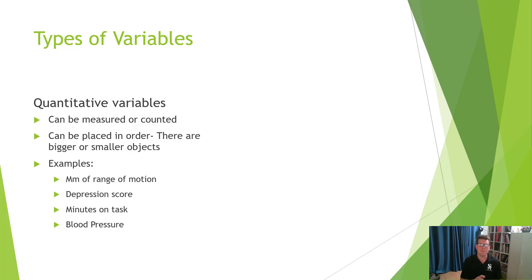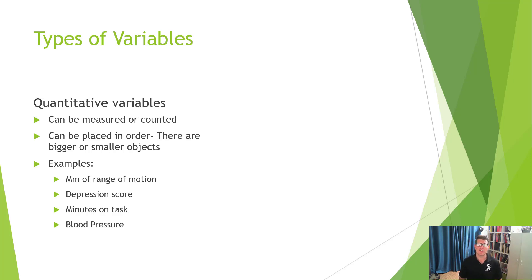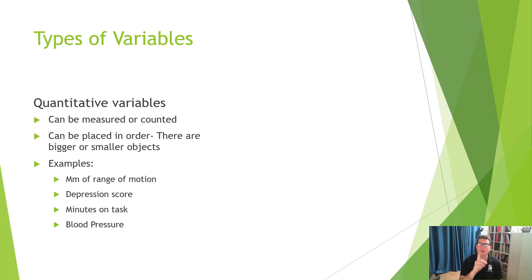For example, millimeters of range of motion: three millimeters is less than seven millimeters, four millimeters is more than two millimeters — notice there's an inherent order. Or depression scores: 72 is a higher depression score than 61, and 53 is a lower depression score than 92. Or minutes on task, or blood pressure. In each case, it's not just that it takes a number — it's that it can be measured, counted, and put in order.